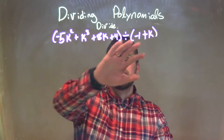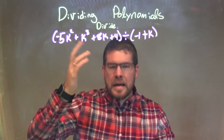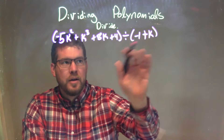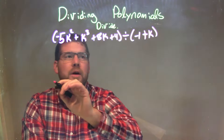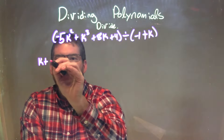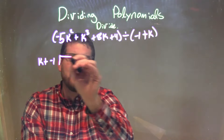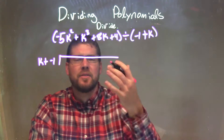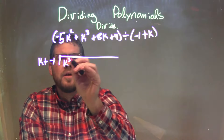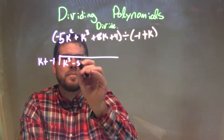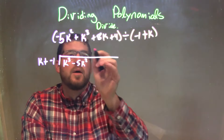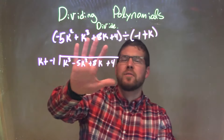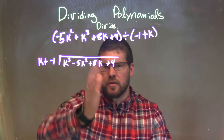So I have my dividend and my divisor. What I notice is that they're not in order in the sense of highest degree first. So when I rewrite this in my long division, my divisor I'm going to put k plus a negative 1 first. And for the dividend, I'm going to rearrange highest degree first: k to the third, then minus 5k squared, then plus 8k, and then plus 4.